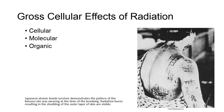Gross cellular effects of radiation include cellular, molecular, and organic. The phenomenon seen most frequently in growing tissue exposed to radiation is the cessation of cell division. This may be temporary or permanent, depending on the magnitude of the absorbed dose of radiation.